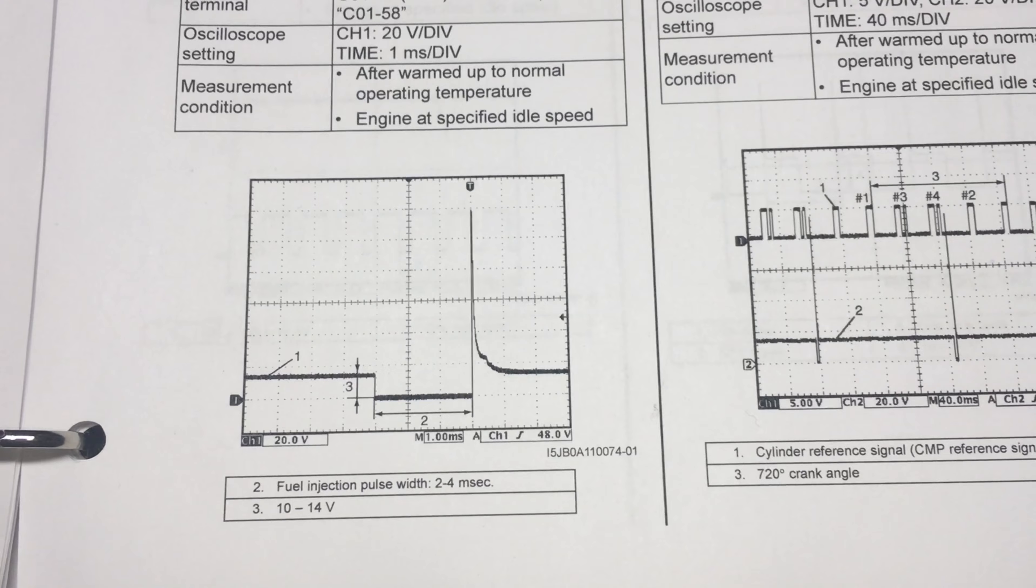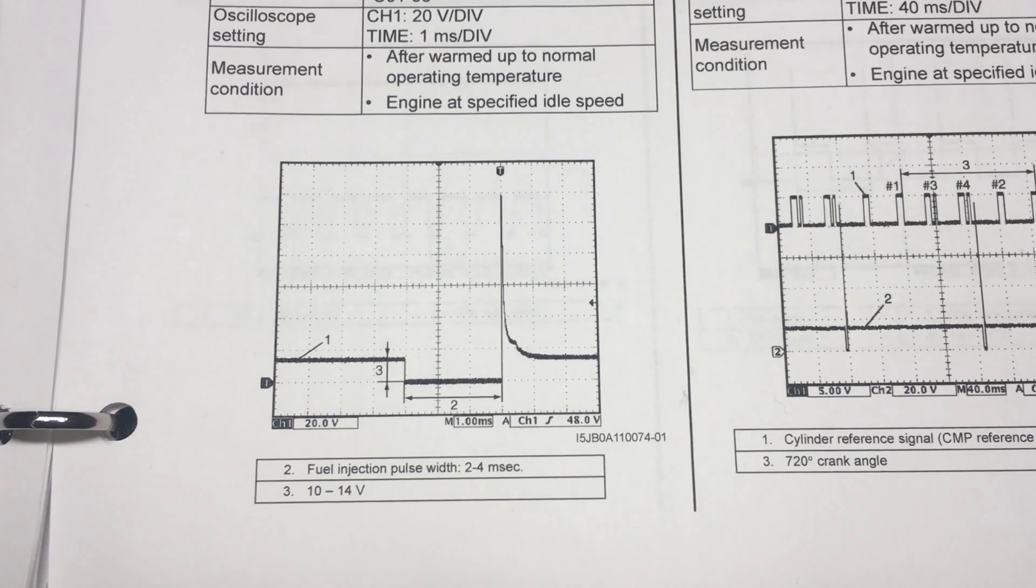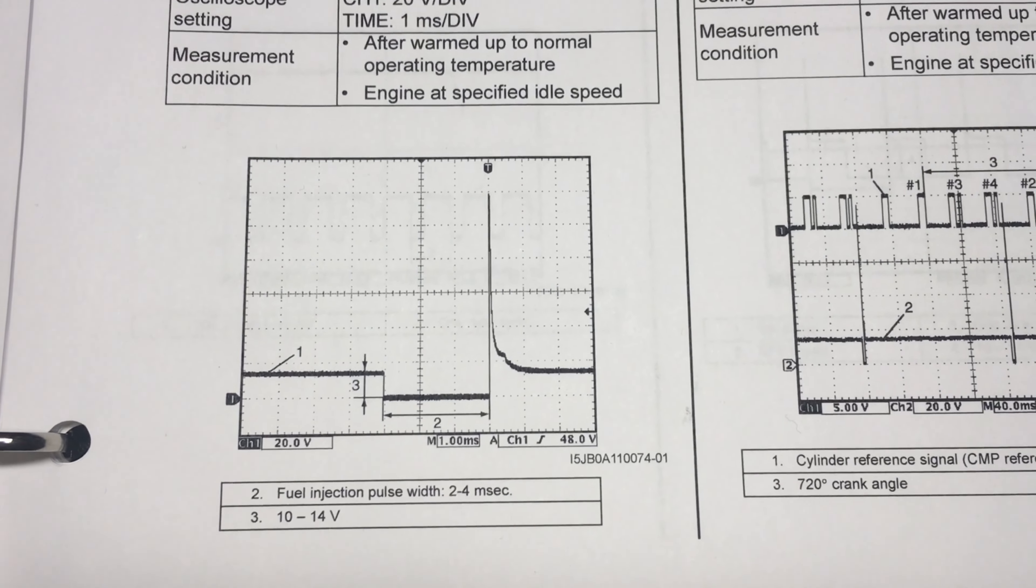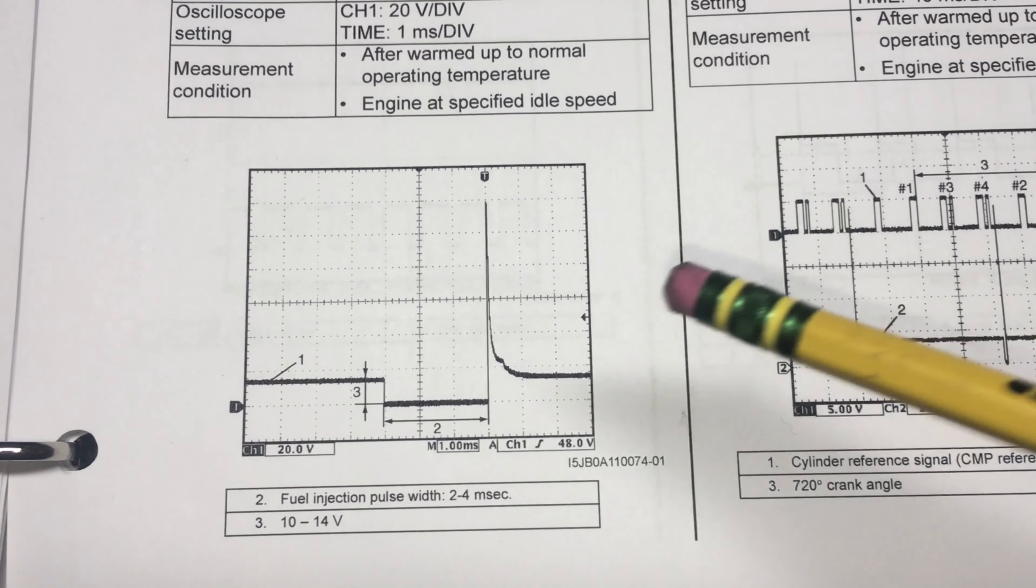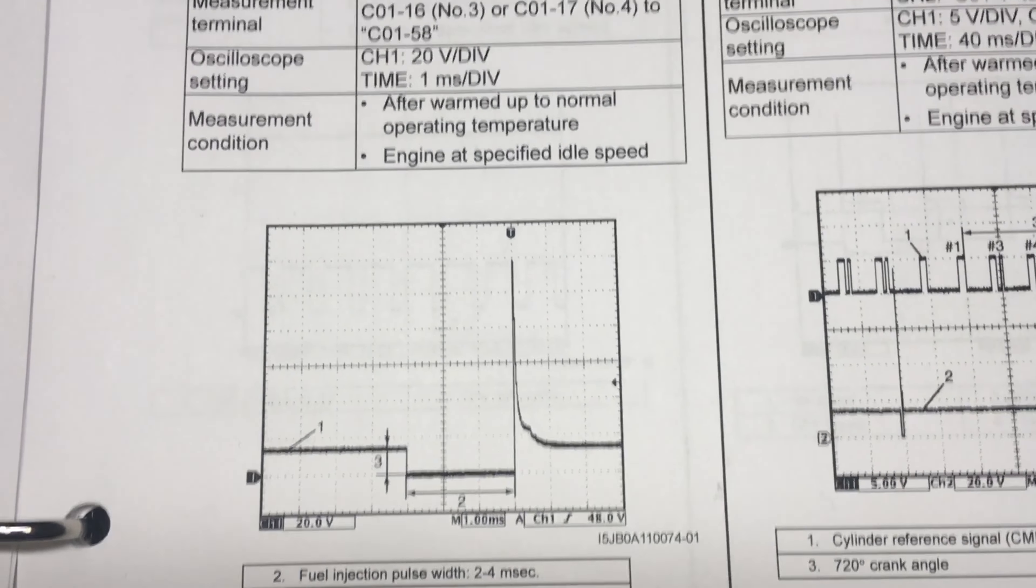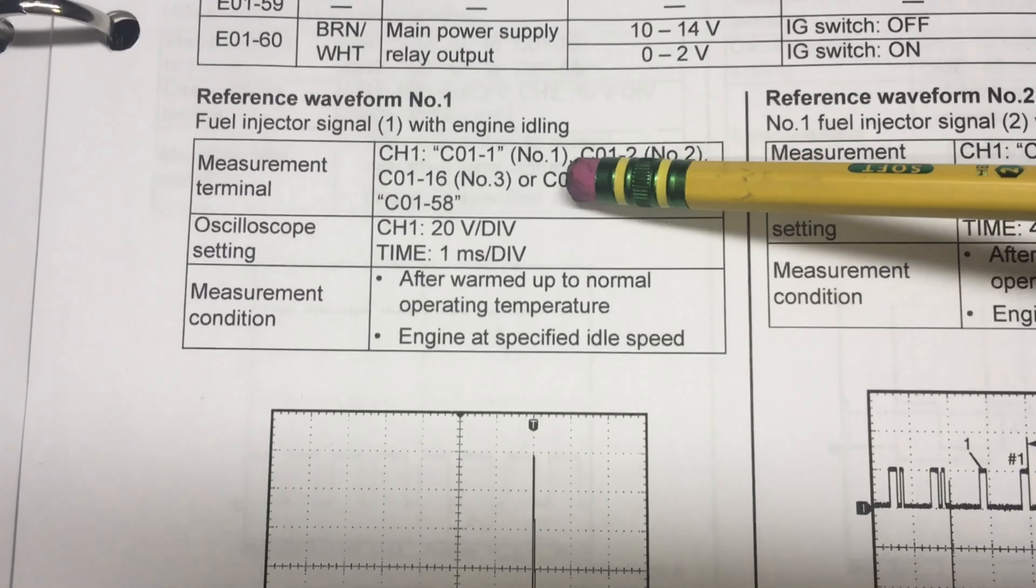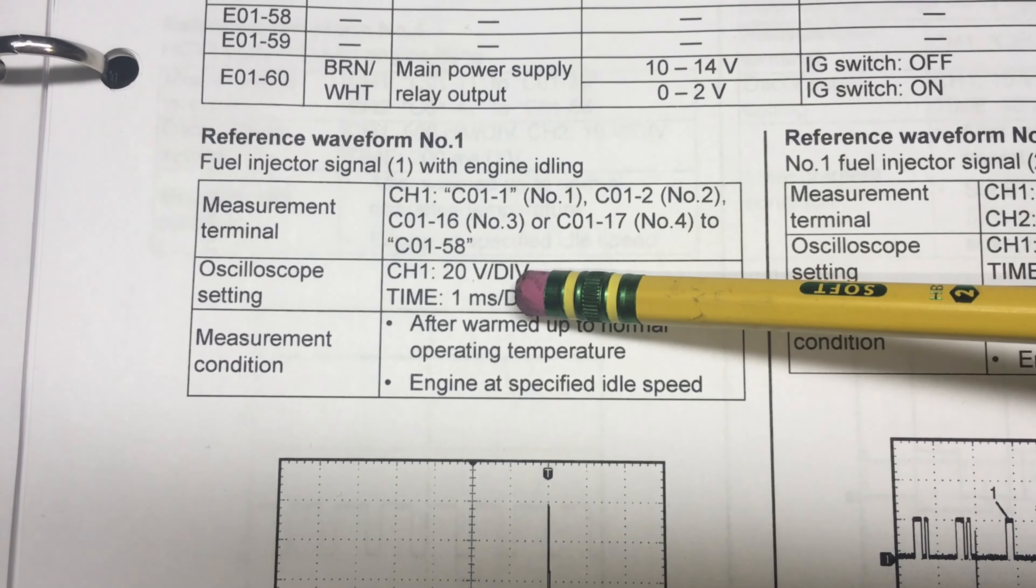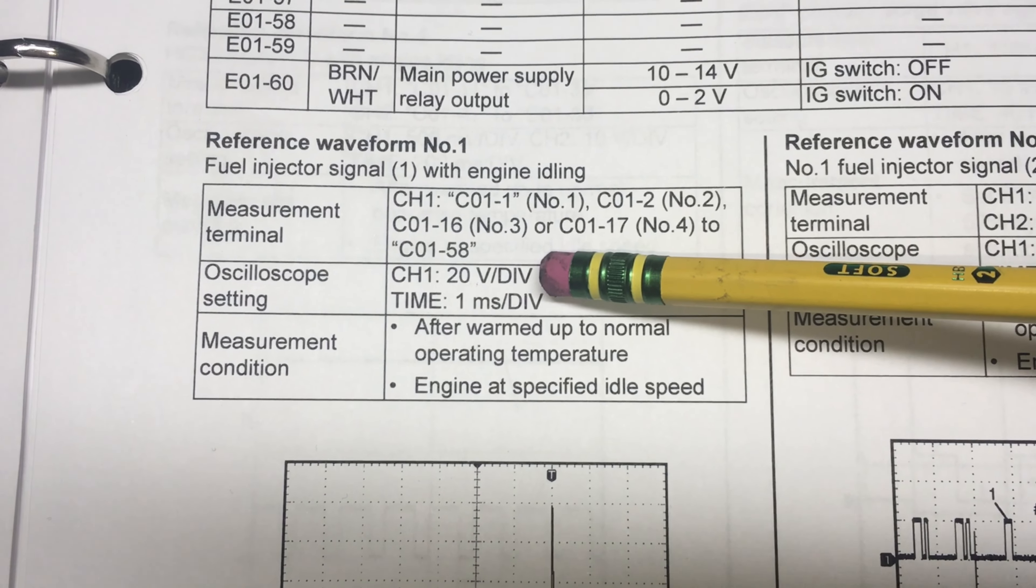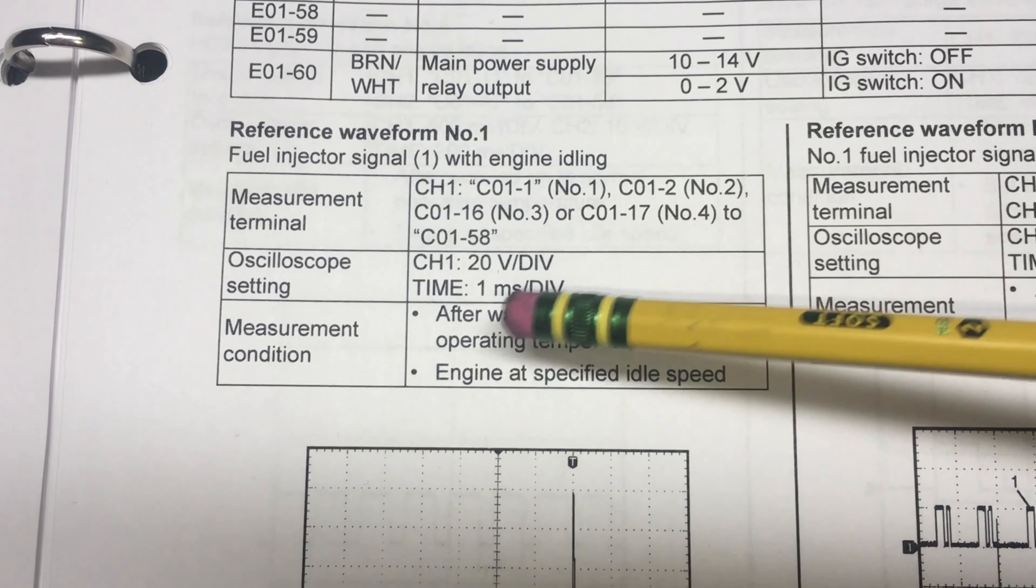The manual doesn't leave you guessing. It actually tells you this is a single channel trace. It tells you the voltage settings, so 20 volts per division, and a time base of 1 millisecond per division. If you look at this trace here it actually makes sense.